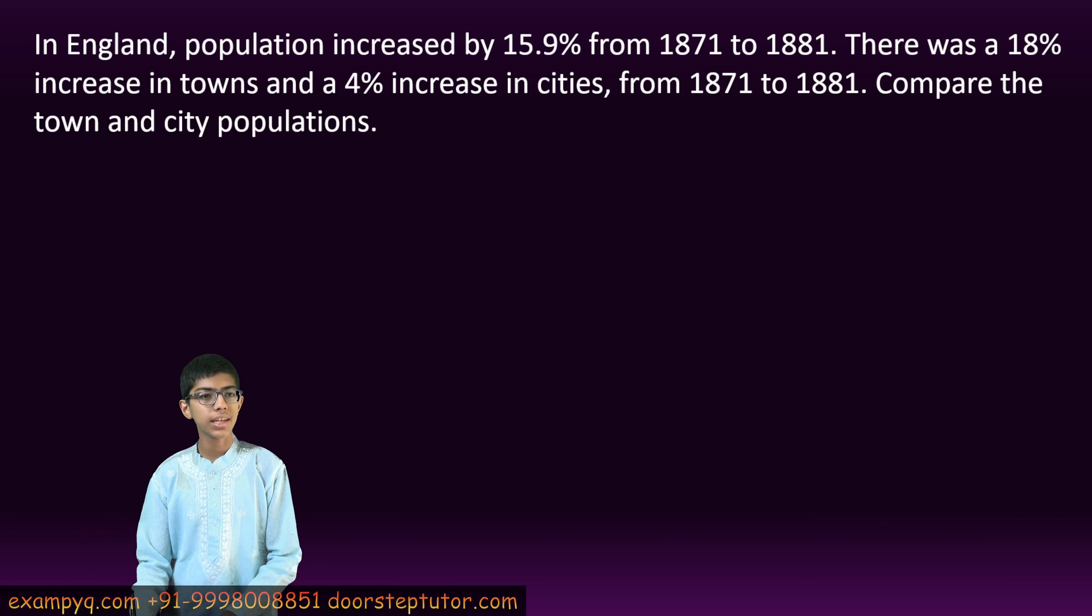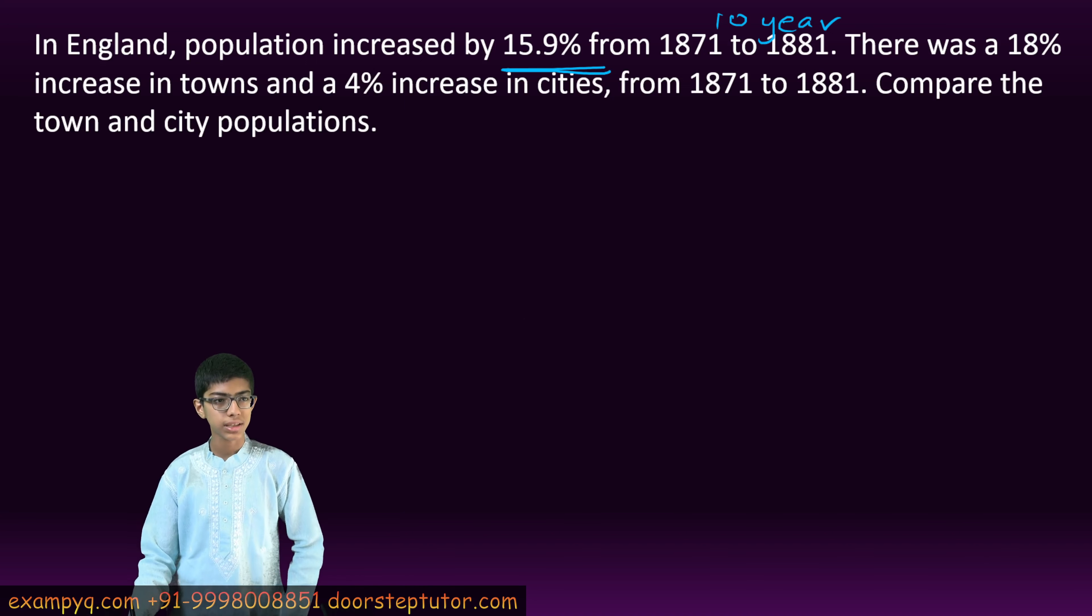In England, the population increased by 15.9% from 1871 to 1881, that is 10 years. There was an 18% increase in towns and a 4% increase in cities.